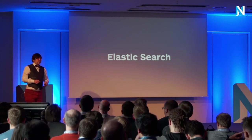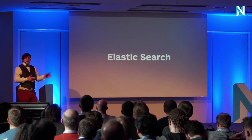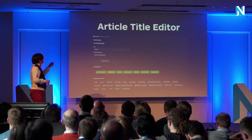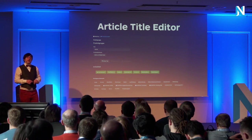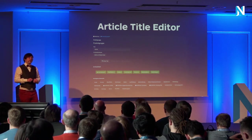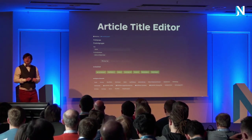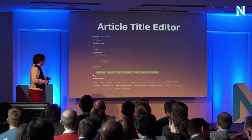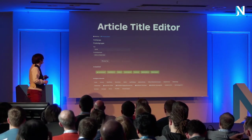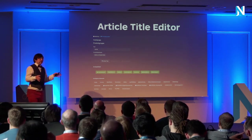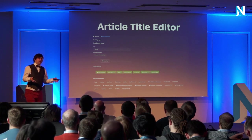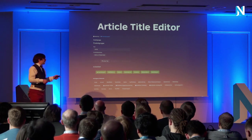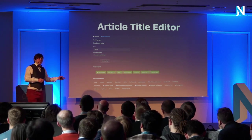We did a lot with Elasticsearch. We built an article titles editor — which is quite funny because their articles don't have titles; it just doesn't exist, they never needed it. So you can select information from the article properties, drag them in some order, and then have the title produced from that. Every title you see on the actual website for a single article is produced by this, and editors have to select how it's produced.